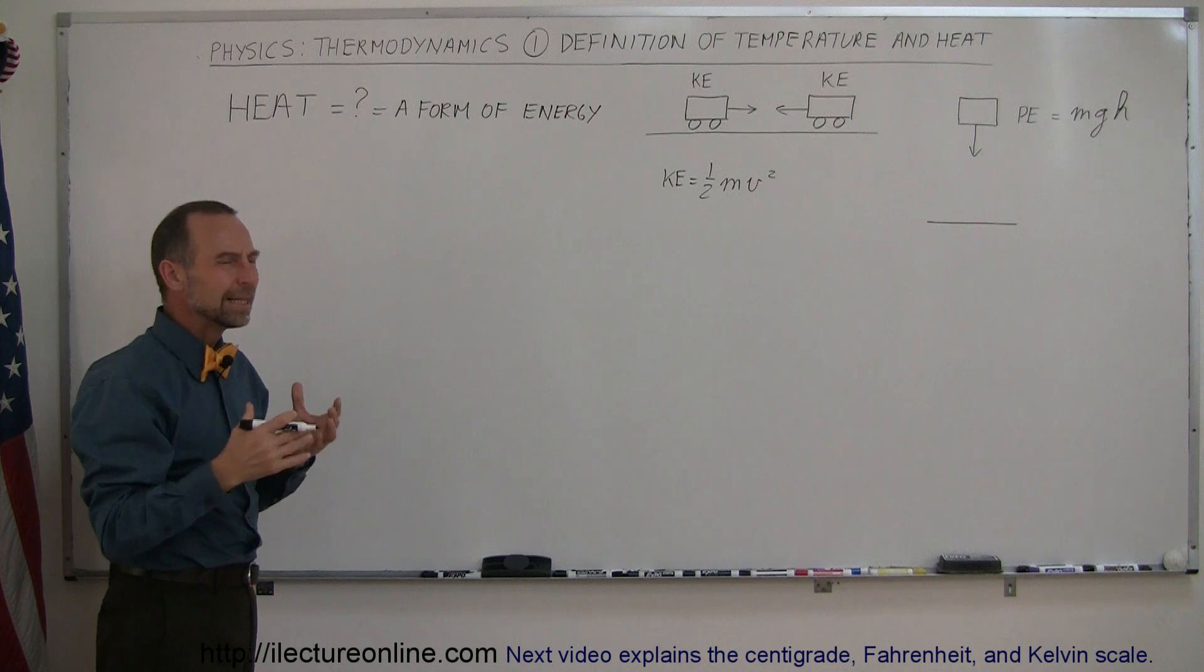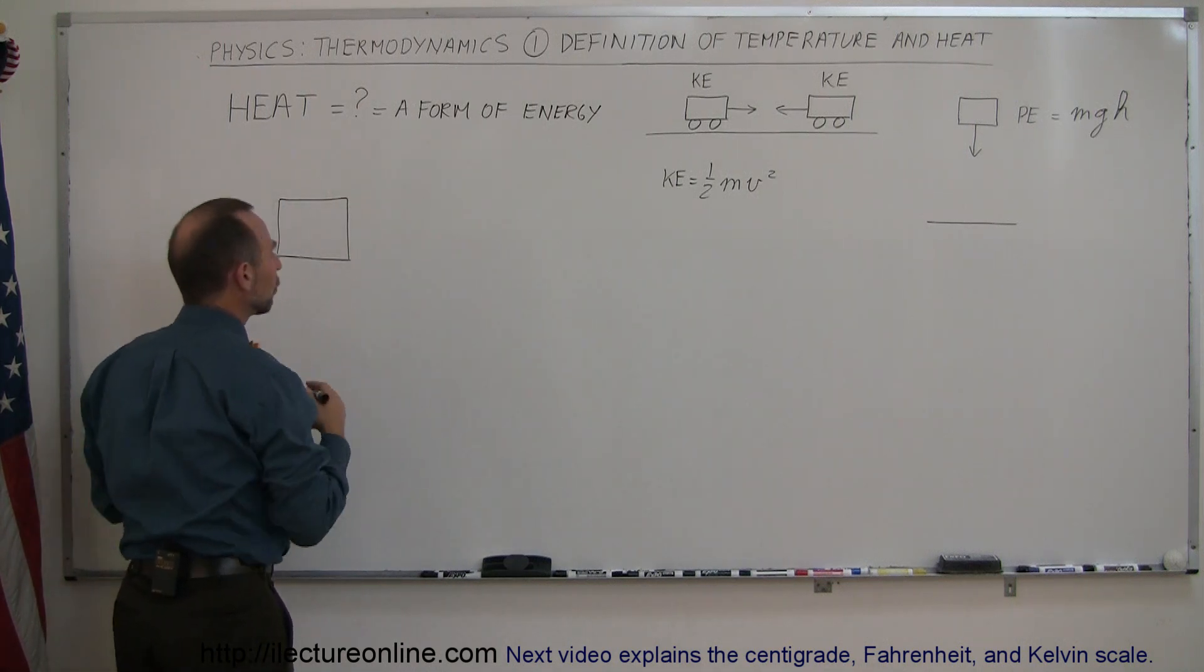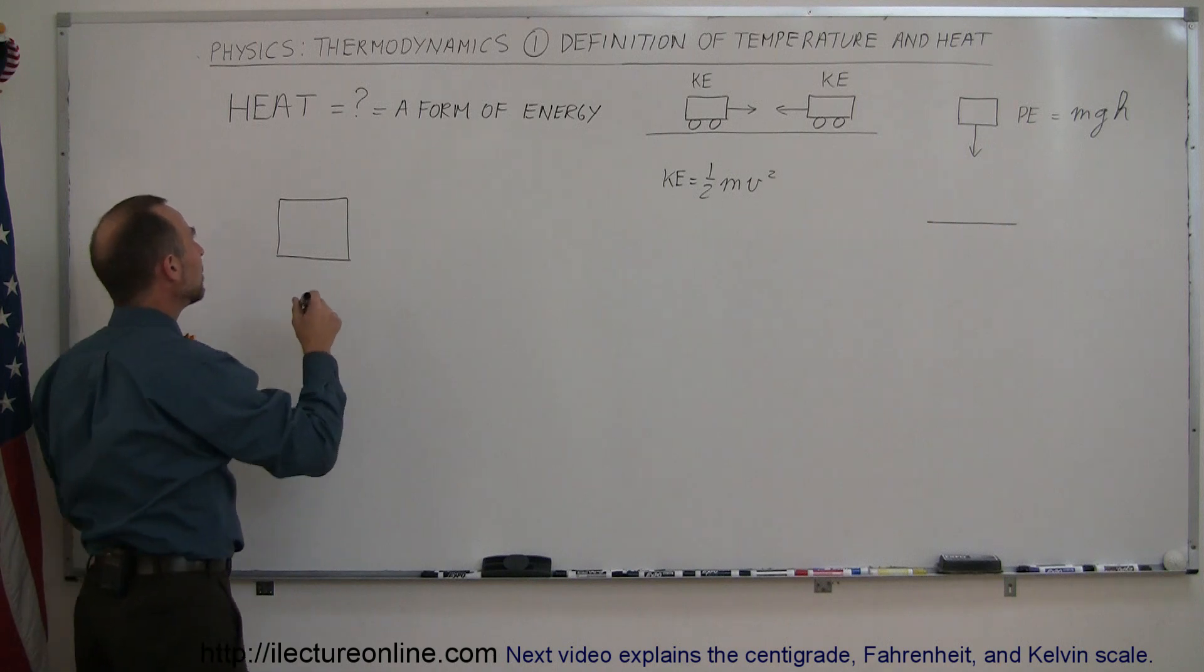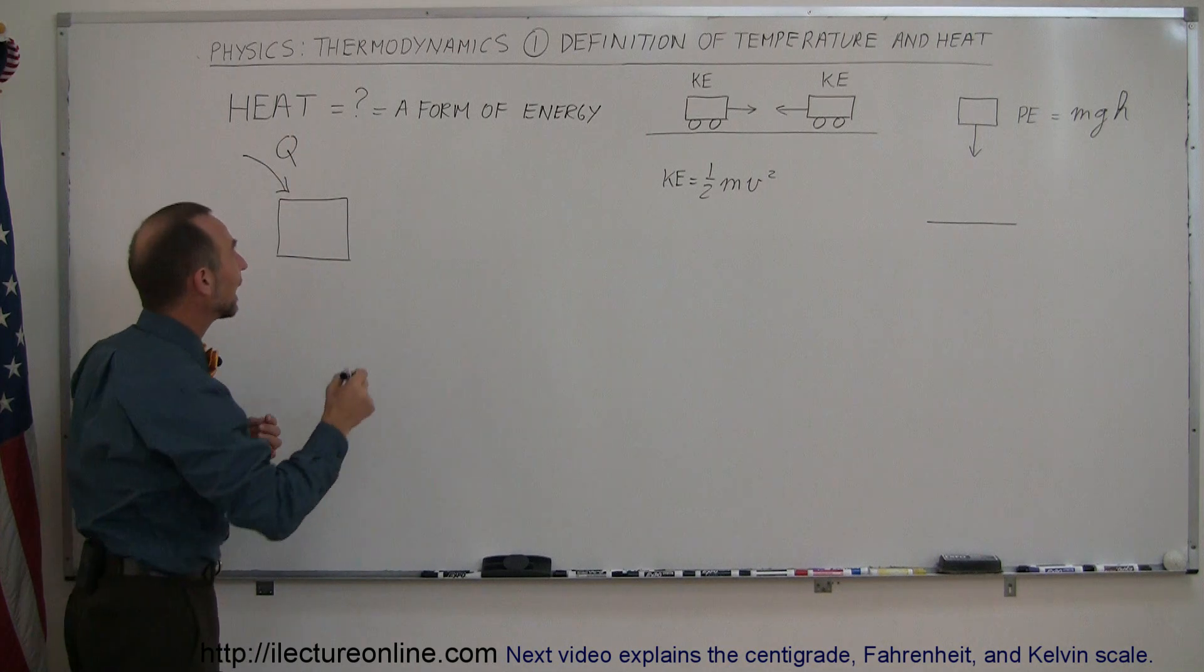So what is that really then? Alright, so let's say we have an object. And that object could contain heat. Matter of fact, most objects, if not all objects in the universe contain heat. What that means is that we added some energy to the object and we use the letter Q to indicate heat.